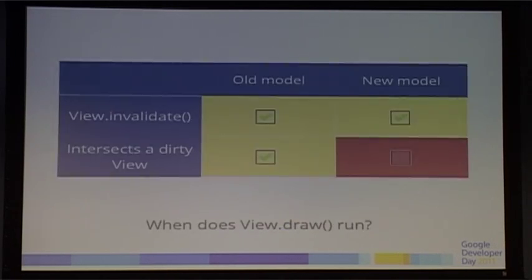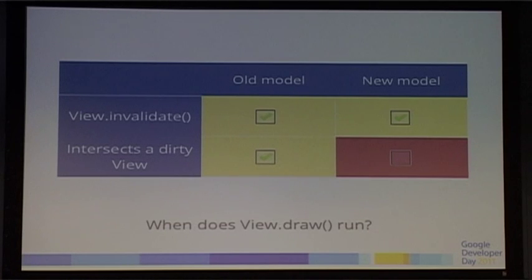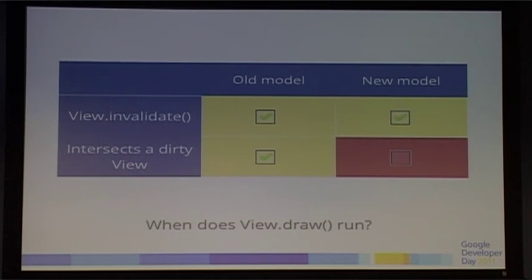There are some caveats. Previously, you may have invalidated a view and sibling views, parent views, and child views would automatically be invalidated and redrawn as well. With the new model, you have to explicitly invalidate the views you want to redraw. If you turn hardware acceleration on and see some glitches — things not redrawing — it's because previously you were assuming they'd redraw by invalidating a sibling or child. You now have to be specific about which views to redraw. That will be the main hurdle, and getting it right will give you a much more performant user interface.